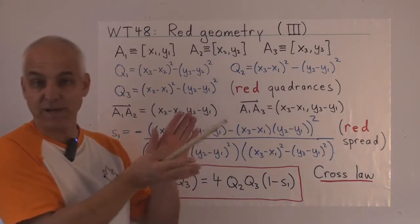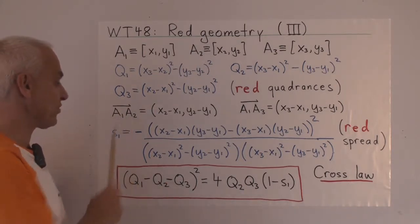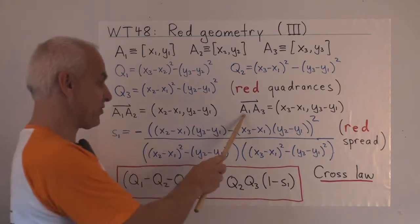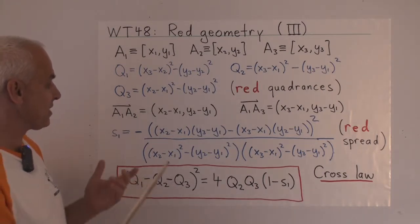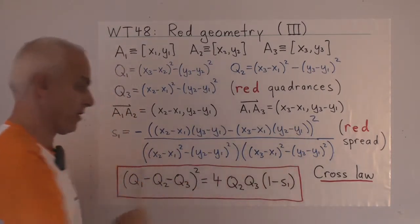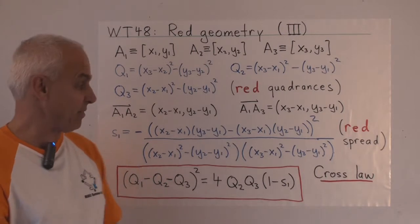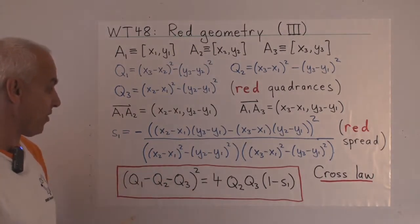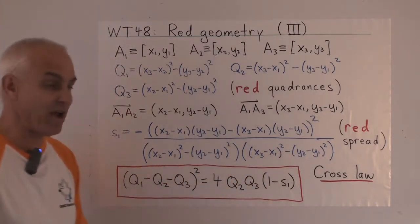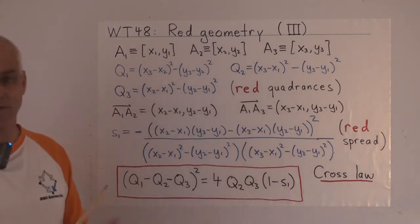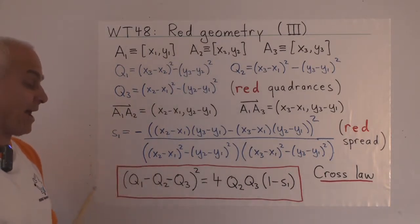Now this triangle also has three lines and those lines make spreads. And we can describe those spreads in terms of vectors. So here's the vector A1, A2 from A1 to A2 and here's the vector A1, A3 from A1 to A3. Those two vectors have a spread. And the formula for the spread is this expression here. And it's very much the same as the familiar blue spread between two vectors with the following exceptions. There's a minus sign here instead of a plus sign. There's a minus sign here instead of a plus sign. There's a minus sign here where there's usually nothing. So there's three new minus signs. Otherwise it's exactly the same as in blue geometry.